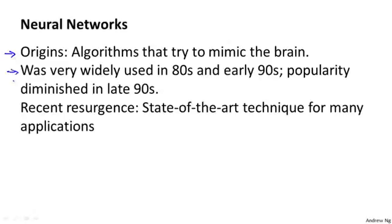Neural networks came to be very widely used throughout the 1980s and 1990s, and for various reasons, this popularity diminished in the late 90s. But more recently, neural networks have had a major resurgence. One reason is that neural networks are a computationally somewhat more expensive algorithm, and it was only more recently that computers became fast enough to really run large scale neural networks. Because of that, as well as a few other technical reasons we'll talk about later, modern neural networks today are the state of the art technique for many applications.